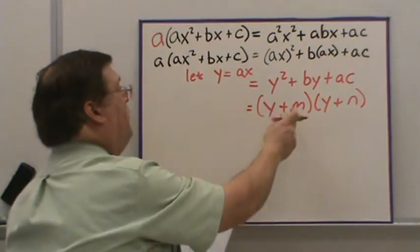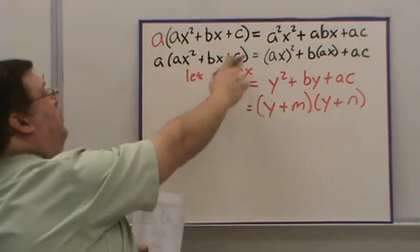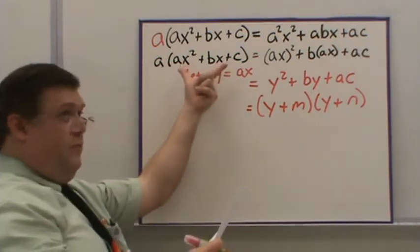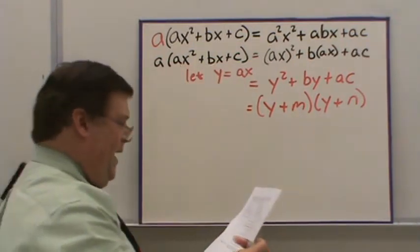Now, in the meanwhile, this is still going to be equal to this up here, our original quadratic multiplied by A.